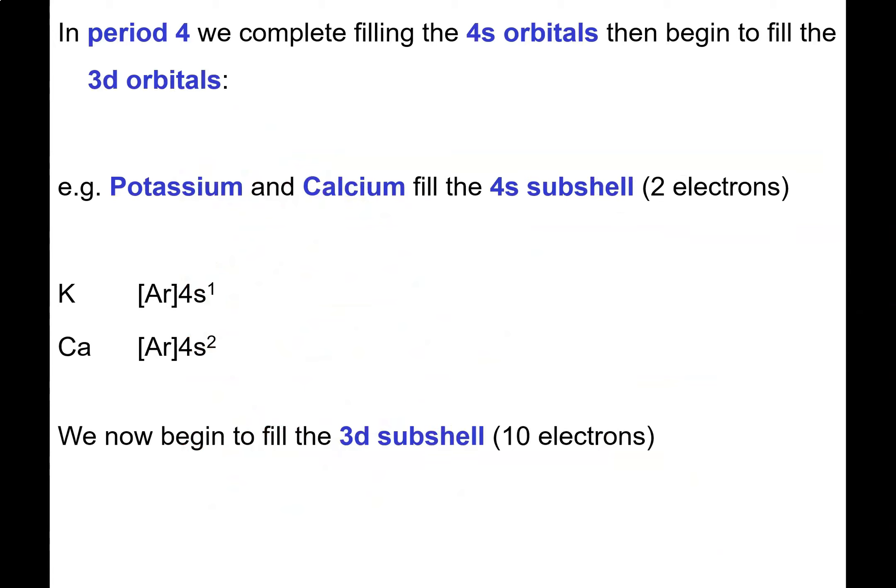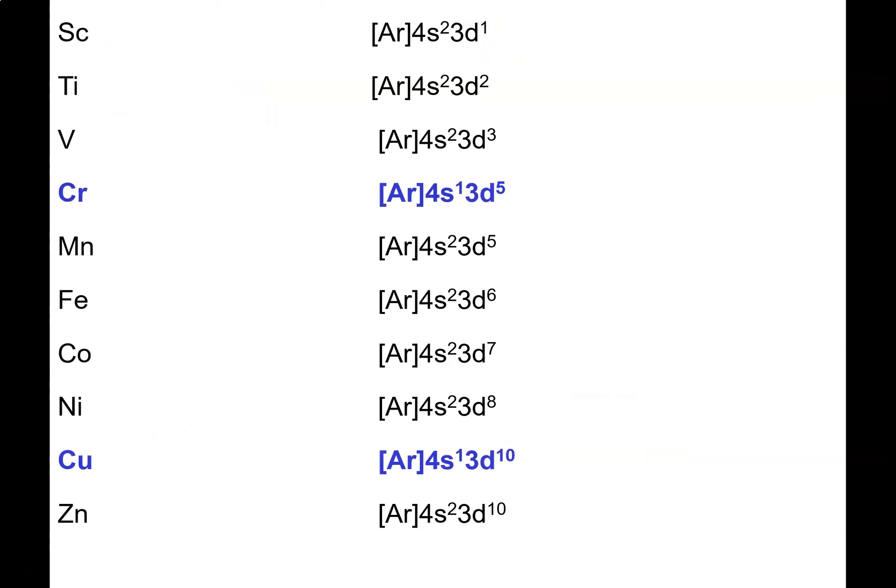So what happens? In period 4, we're going to finish off the 4S orbital, and then we start filling up the 3D orbitals. Potassium is the first member of the 4th period. It has electron configuration written in condensed form as Argon 4S1. Next to potassium is calcium, Argon 4S2. And then now we begin filling up the 3D. The 3D can take 10 electrons, so we're going to do this fairly promptly.